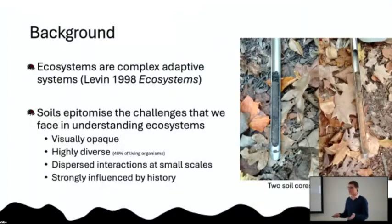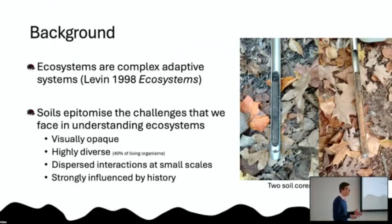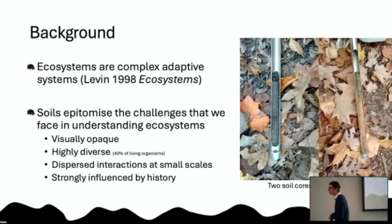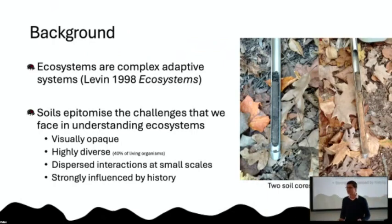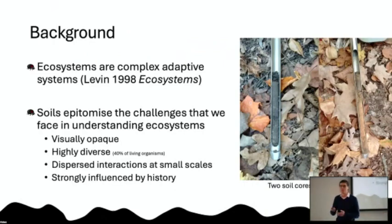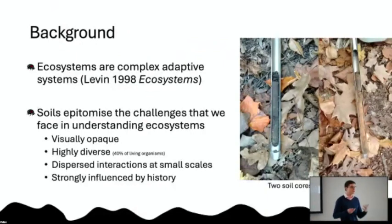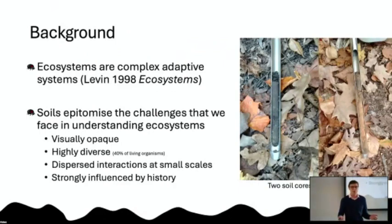Ecosystems like this one are complex adaptive systems that are really challenging to predict in terms of future dynamics. One of the places that epitomizes this complexity is the soil. This is complex for a number of practical reasons — soils are visually opaque, and as soon as we take the players out of this complex system to study them independently, we expect their behavior and interactions to change.